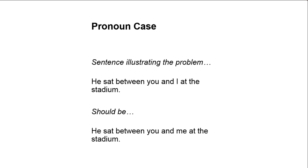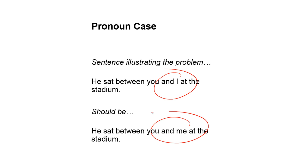Let's start by looking at a simple sentence that illustrates this specific writing error. 'He sat between you and I at the stadium' should be 'he sat between you and me at the stadium.' Notice that the personal pronoun I, which is subjective, shifts to the personal pronoun me, which is objective.